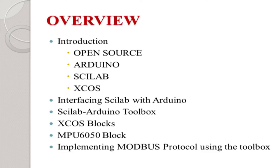I'll give you an introduction and basic overview, which consists of open source, Arduino, Scilab, and XCOS. Then the interfacing part of Scilab and Arduino. Then the main toolbox — the Scilab RTNO toolbox — which is used to link Scilab with the Arduino hardware. Then XCOS blocks, then the MPU-6050 block, which was created by Kiranmai and Abhil Asha. In the end, we'll demonstrate and implement the Modbus protocol, an industrially used serial communication protocol, using the Scilab Arduino toolbox. It has not been done before.